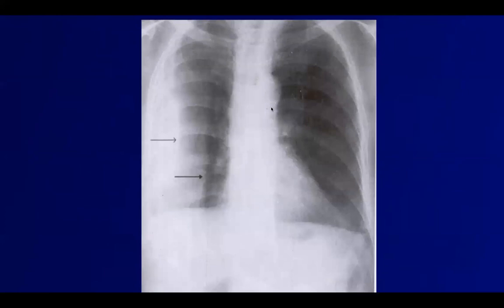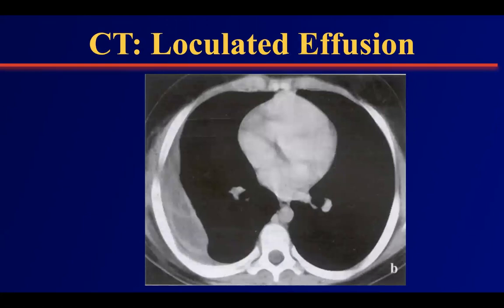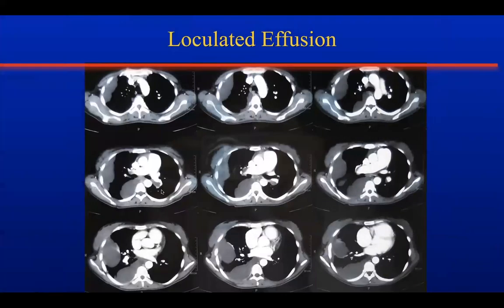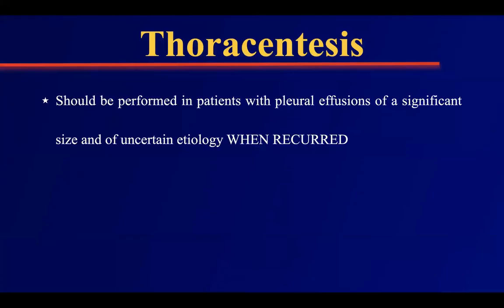A chest radiograph can help suspect loculation. If you see non-parabolic consolidation on an upright film, you should suspect loculated effusion. CT is the second radiological instrument — it is helpful to identify loculated effusions. This patient's CT, taken after operation, shows many loculations that developed post-operatively. CT is a straightforward radiological examination tool to understand loculated effusion.